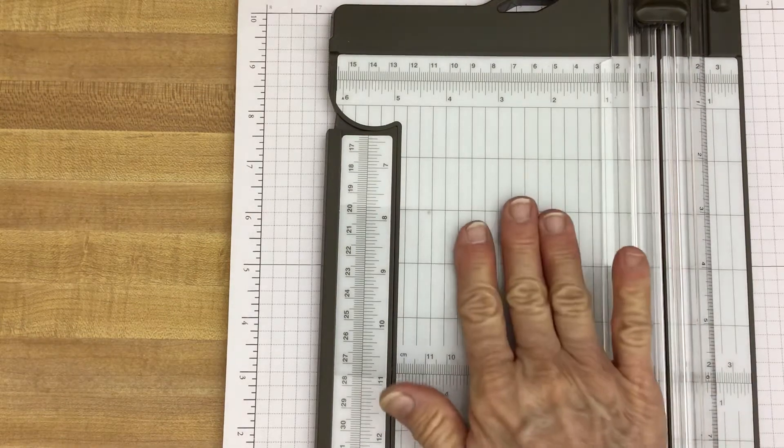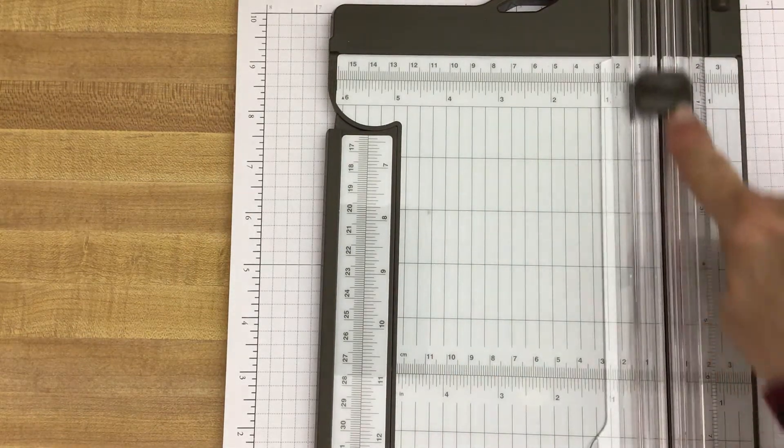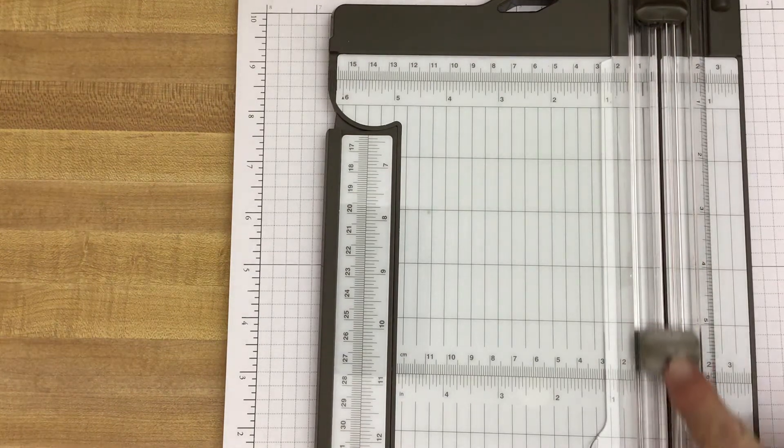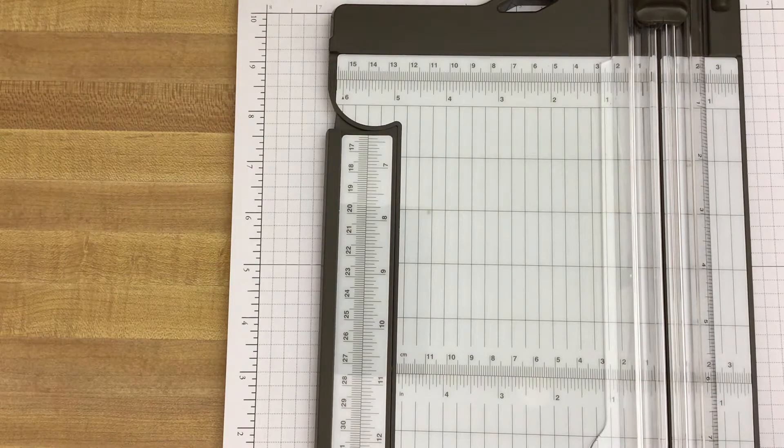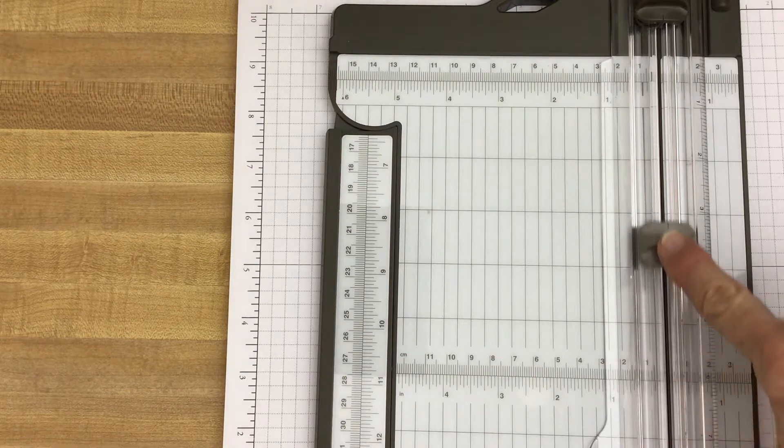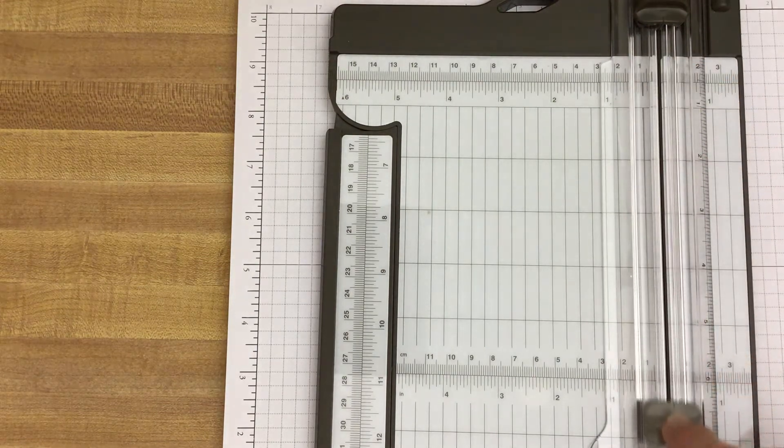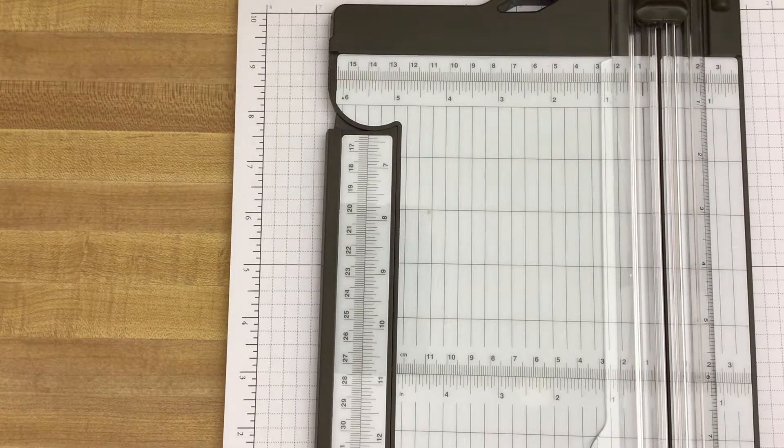So I have my Stampin' Trimmer and I have the cutting blade, which is the darker one, and then the scoring blade, which is the lighter one. The scoring blade, it just makes a little indentation that helps us fold and work with our paper more easily.